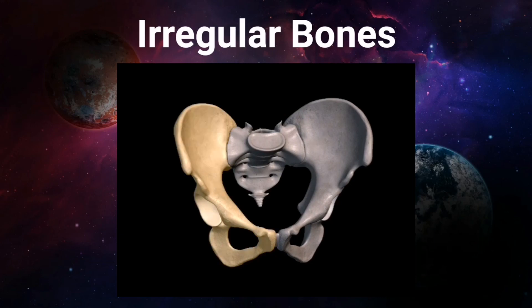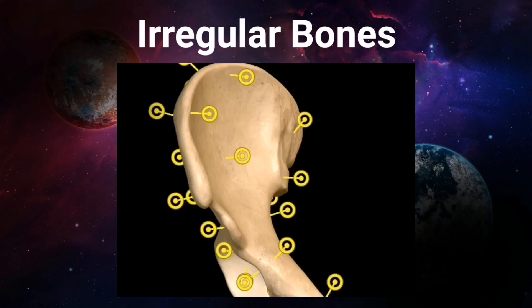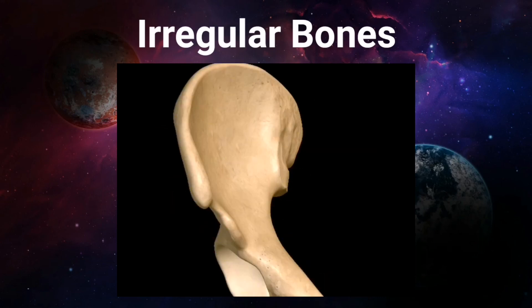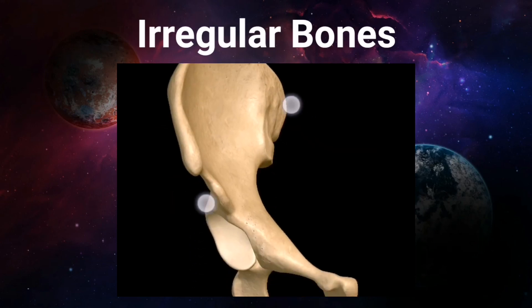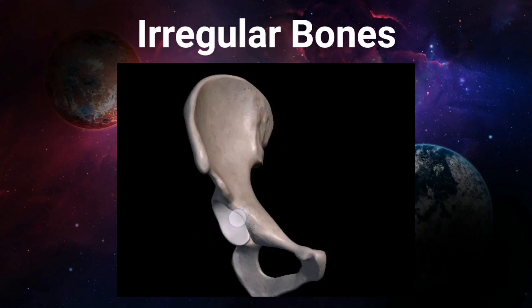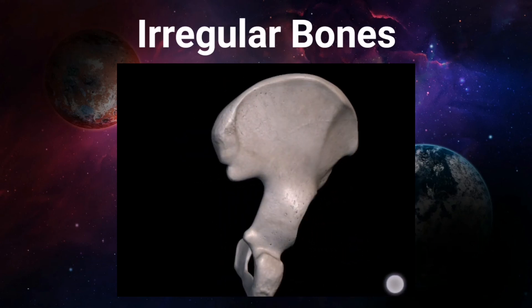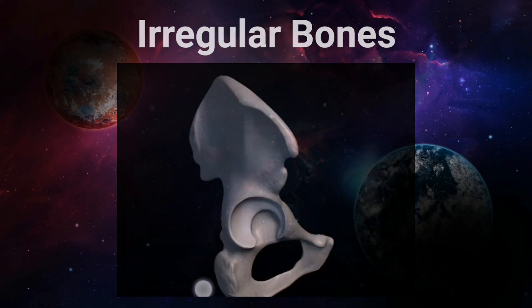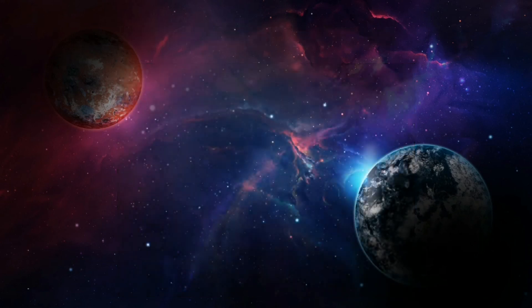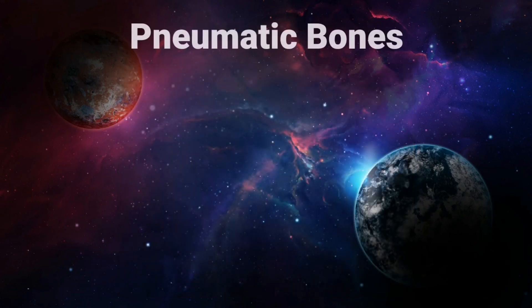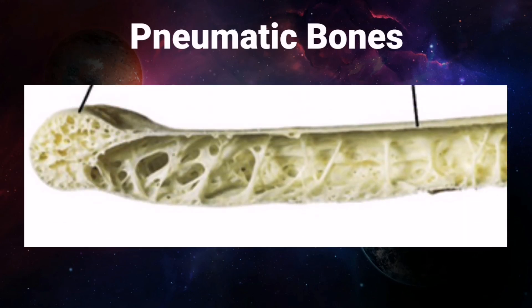Irregular bones don't have a specific structure. Different parts of the body contain irregular bones having completely different structures from each other — for example, the vertebra, the hip bone, and the bones in the base of the skull.